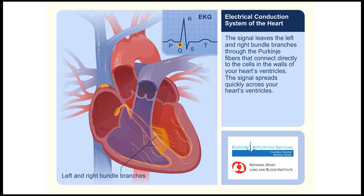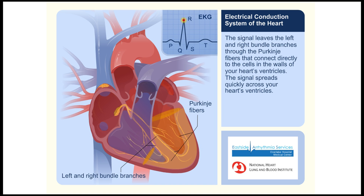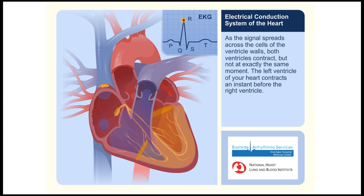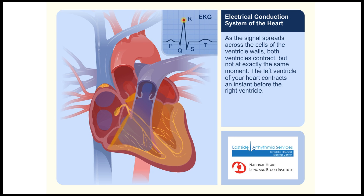The signal leaves the left and right bundle branches through the Purkinje fibers that connect directly to the cells in the walls of your heart's ventricles. The signal spreads quickly across your heart's ventricles, and as it spreads across the cells of the ventricular walls, both ventricles contract, but not exactly at the same moment.